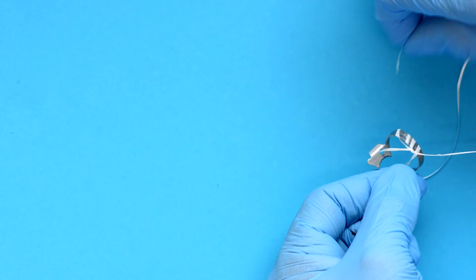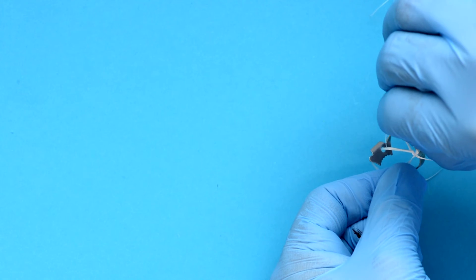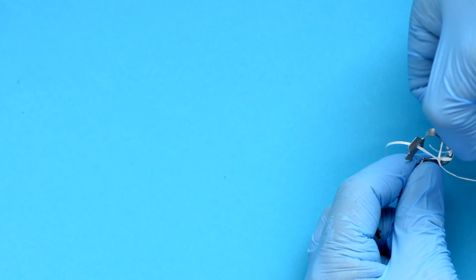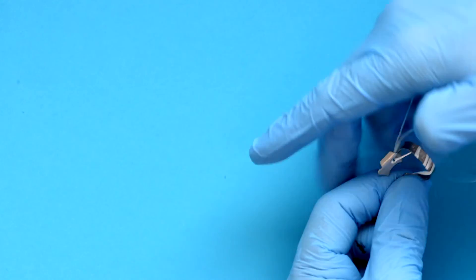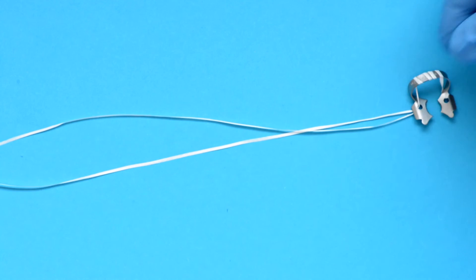And you do the same with the other side. It's a bit fiddly, especially when the floss curls, but just pull it through. And that's it, that's your safety ligation done for the rubber dam clamp.